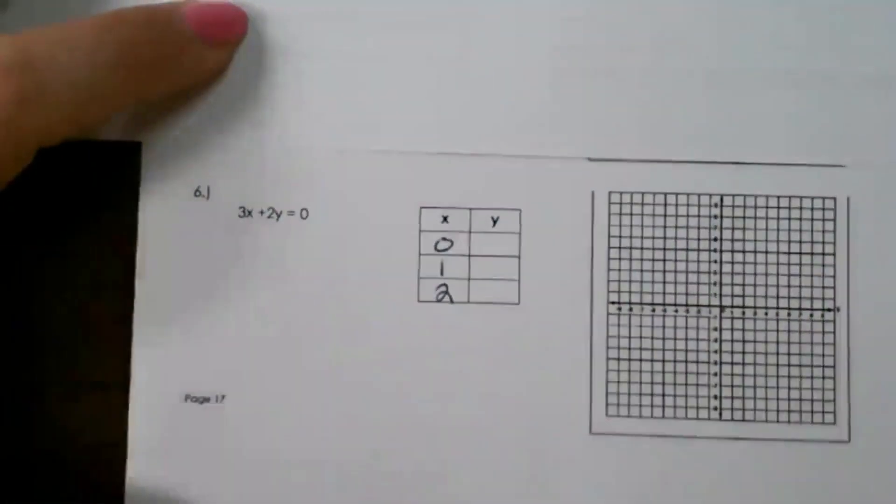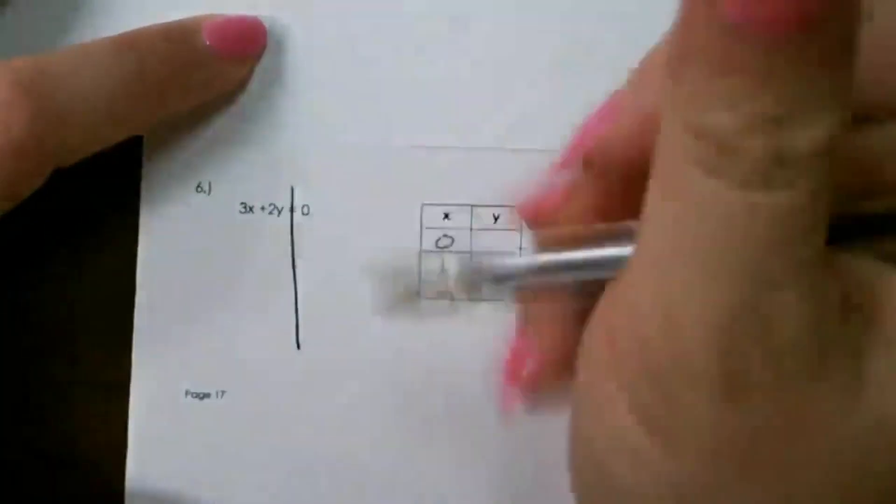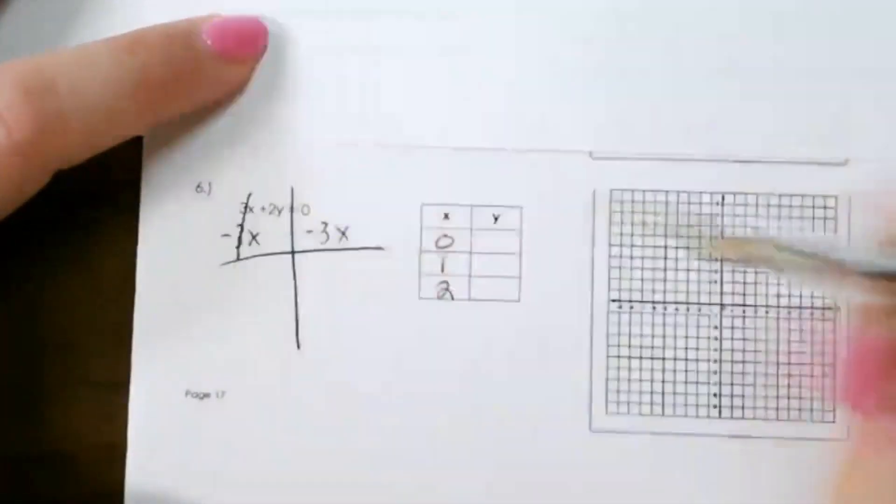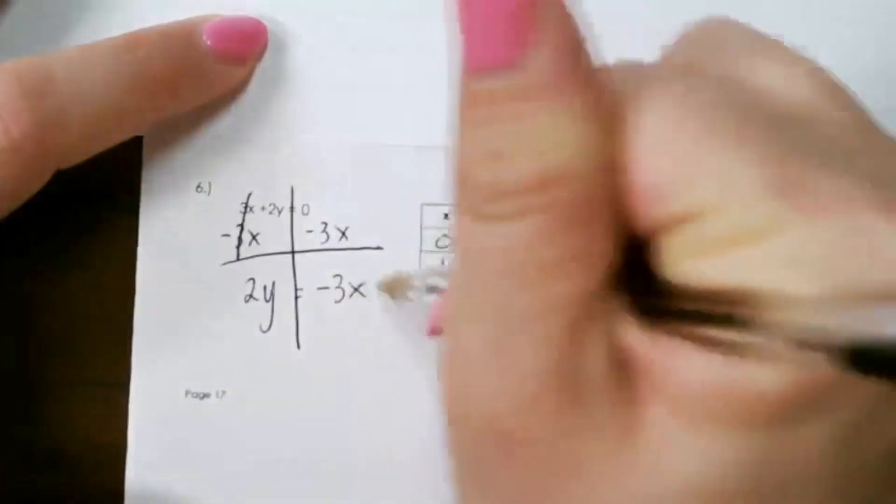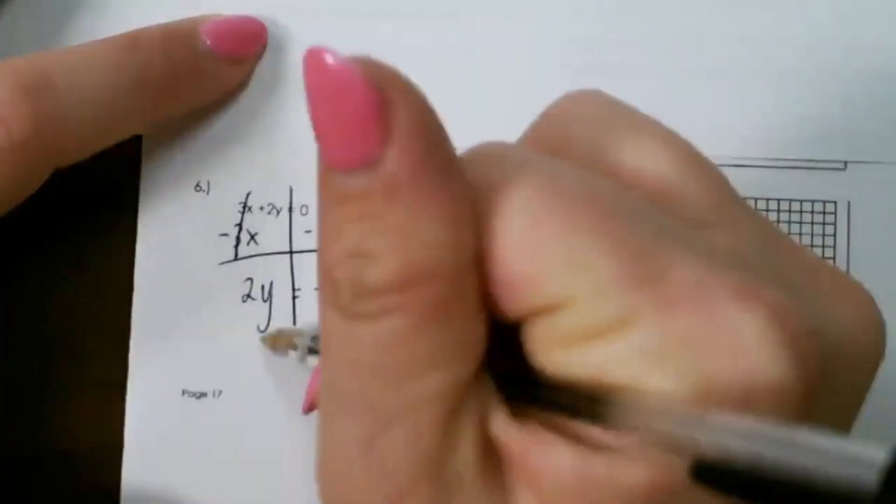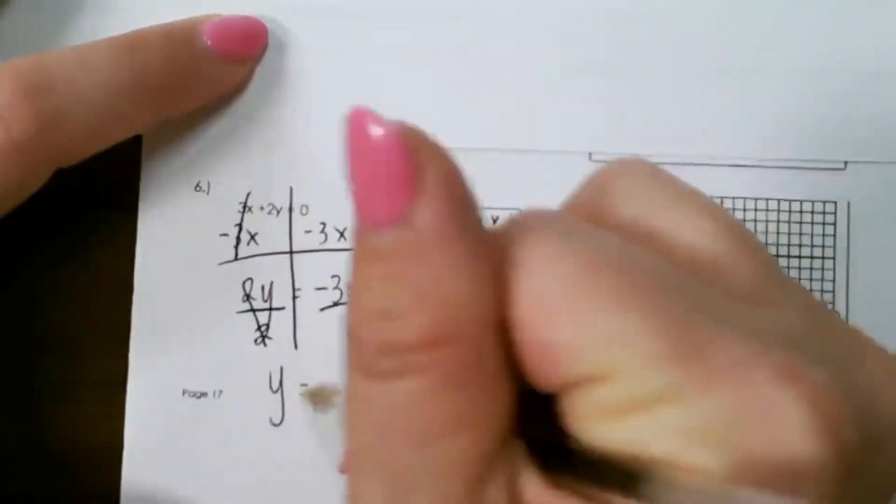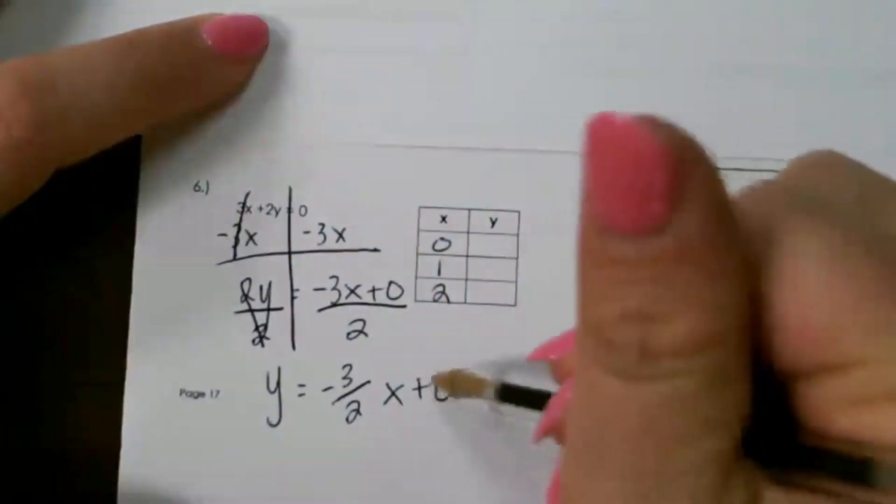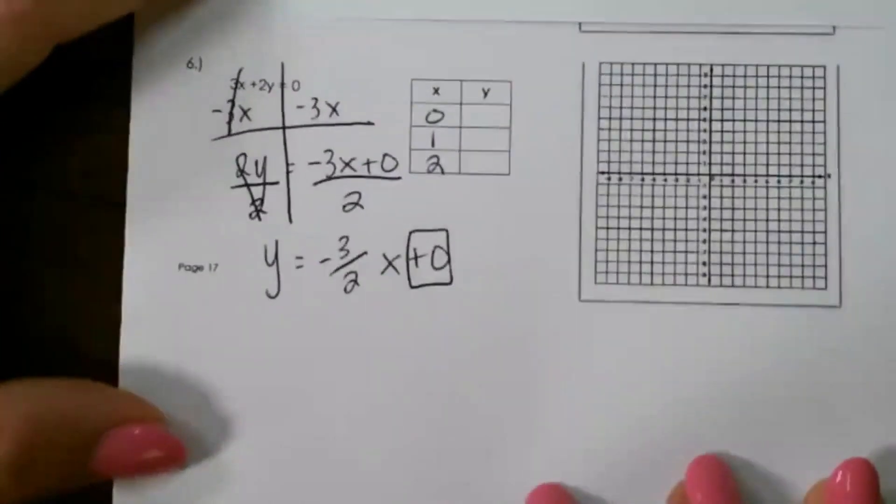Alright, so here's our equation and we need to change that to slope intercept form. So I want to take the 3x over to the right-hand side and that's going to give me 2y equals negative 3x plus 0. Then I want to divide by 2 and that leaves me with y equals negative 3 halves x plus 0. You can leave off the plus 0 if you want or leave it there. It doesn't make a difference.